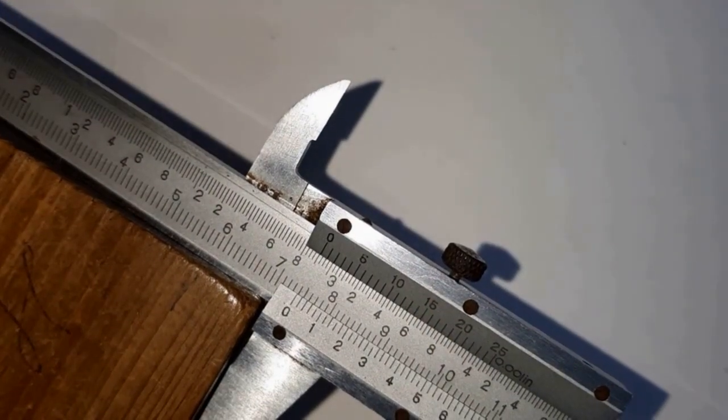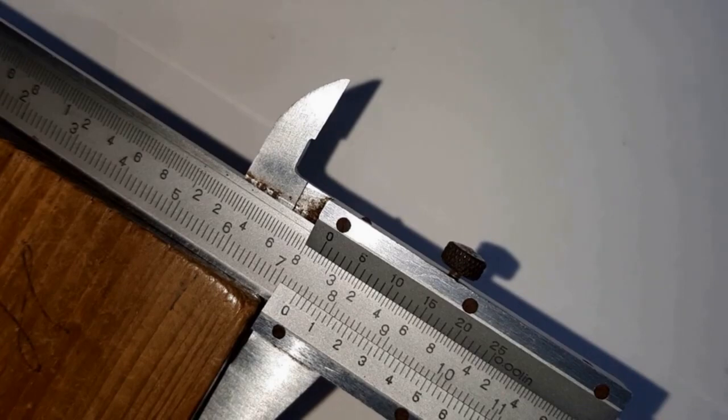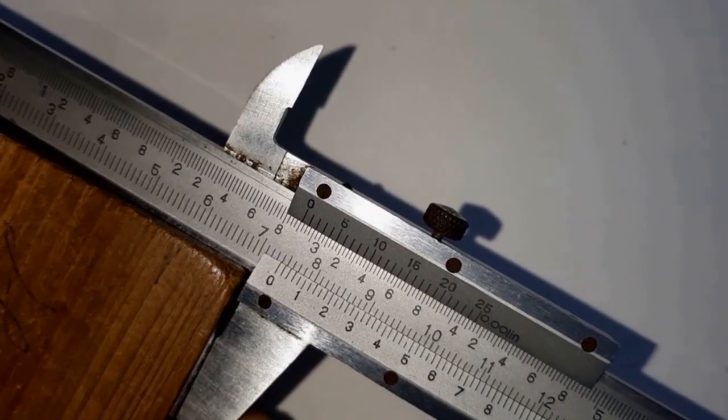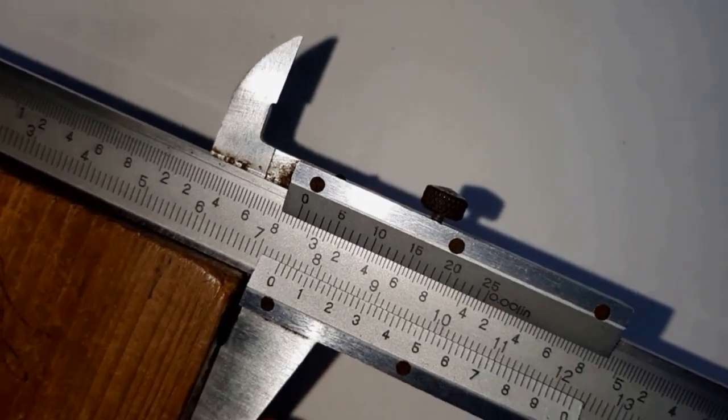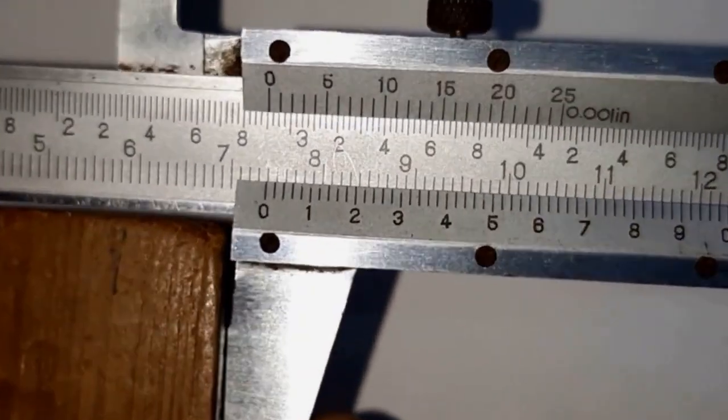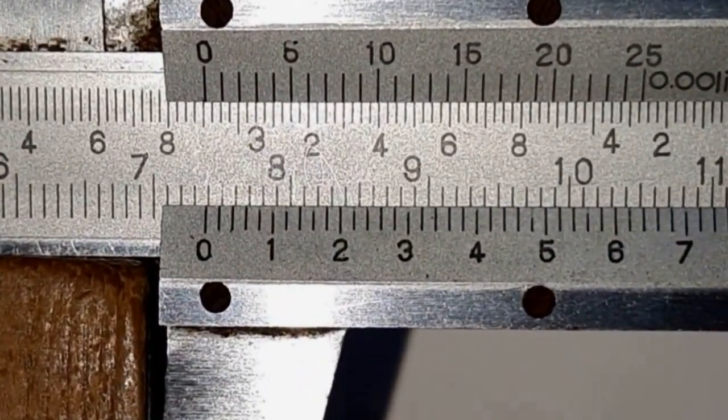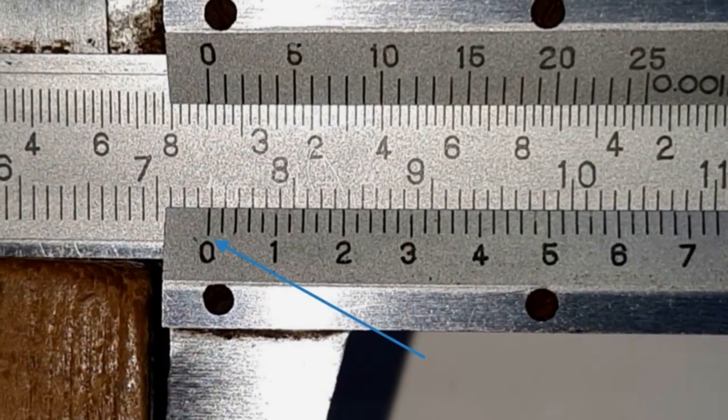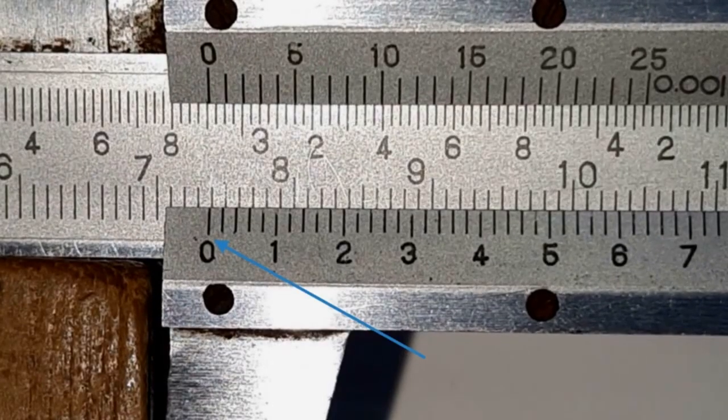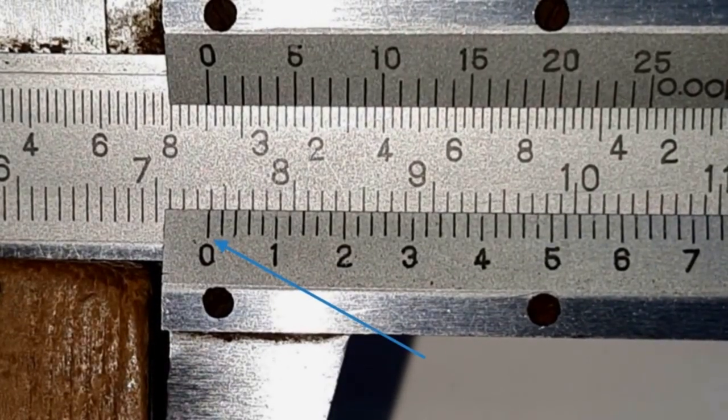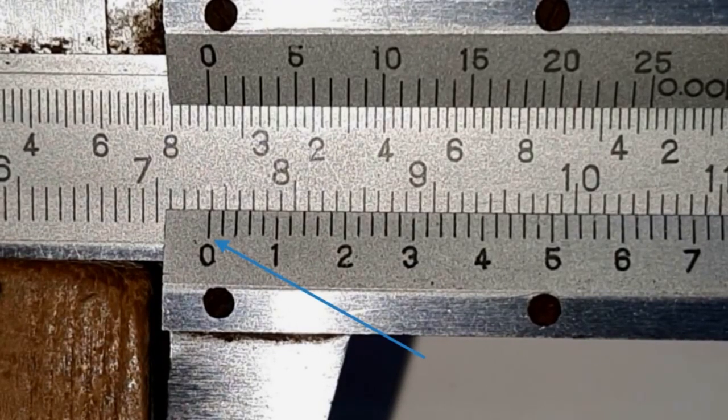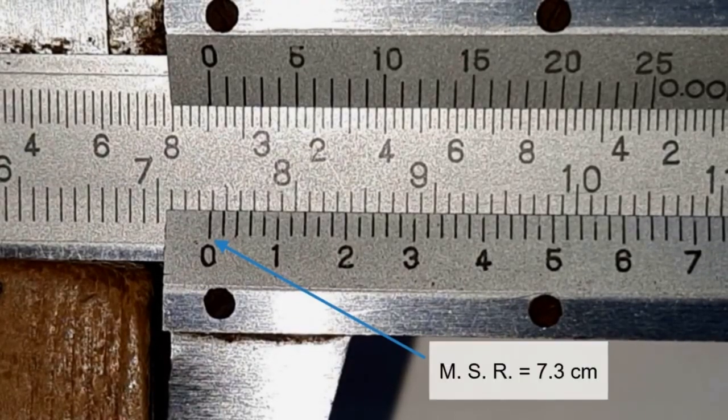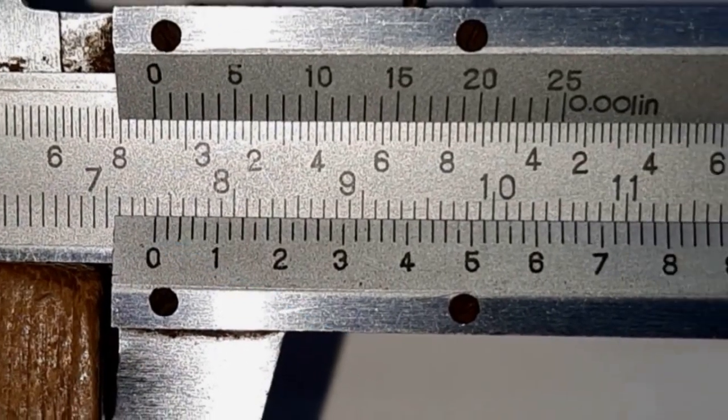The length of the block is found by reading the main scale and vernier scale simultaneously. The main scale is read by noting the position of the zero of the vernier scale onto the main scale. As you can see in our case, the zero of vernier scale lies between 7.3 cm and 7.4 cm. It means it has crossed 7.3 but has not reached 7.4 cm. So, the main scale reading is 7.3 cm.